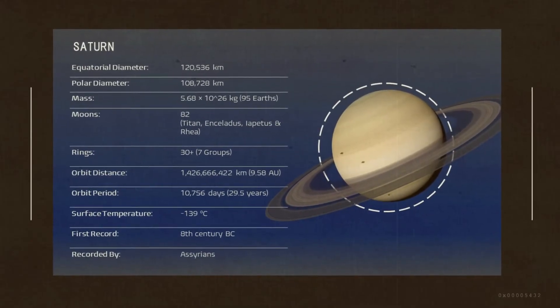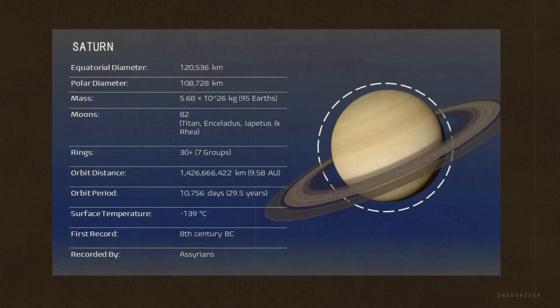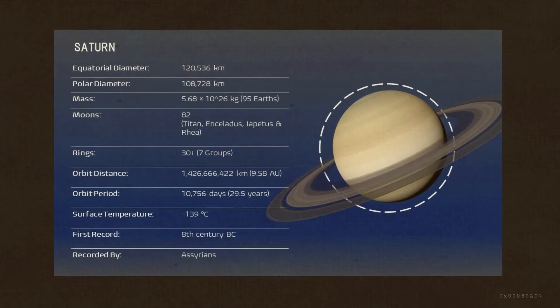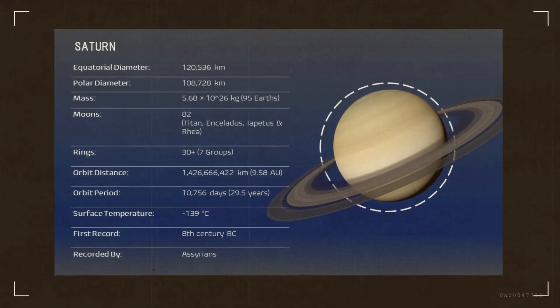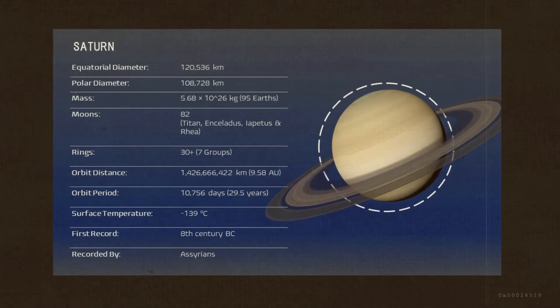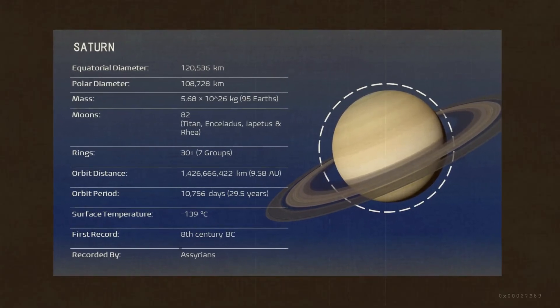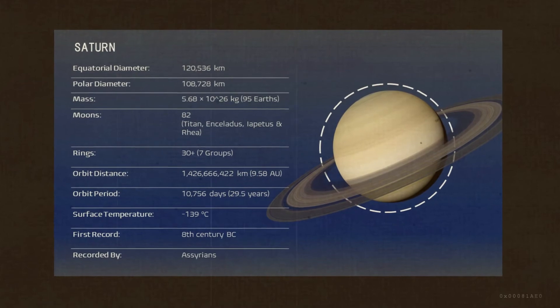Saturn has more moons and rings than any other planet. Saturn is the most distant planet that we can see with the naked eye. Saturn is named after the Roman god Saturnus, and was known to the Greeks as Cronus.